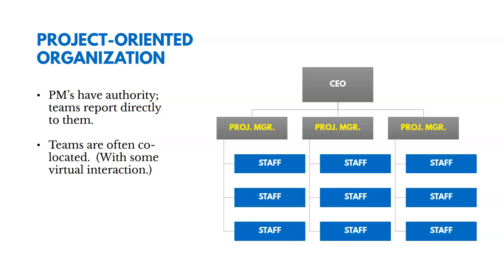In a project-oriented organization, project staff report directly to a project manager. Those project managers do their performance reviews and have control of the resources underneath them. The teams are often co-located — they'll sit in the same room or the same office building, and in some cases have virtual interaction. You can see how those two types of organizations are structured differently and how their hierarchies look.